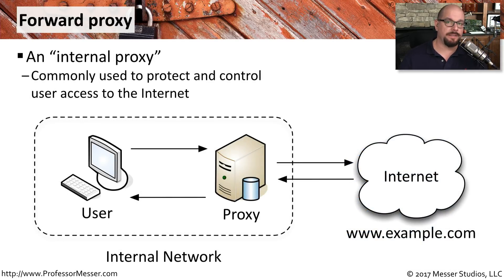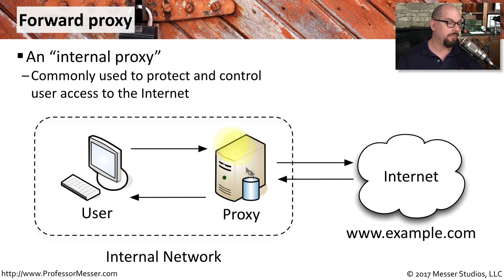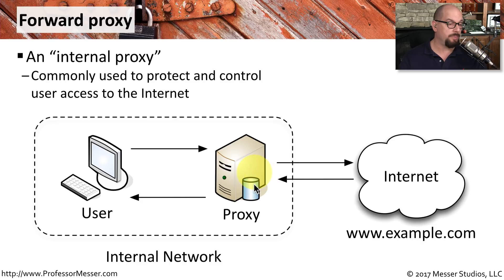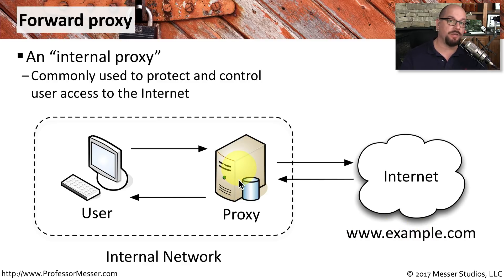There are also different proxies that operate in different ways. If we have a proxy on the inside of our network that we're using to help our users protect themselves from the internet, this is usually a forward proxy. The user will make a request to the internal proxy, which will then make the proxy request on the user's behalf to the internet. The proxy will analyze the response, make sure everything is legitimate and secure, and then send that response to the user. This is also an opportunity for URL filtering — if the user requests a URL they are not allowed to visit, the proxy will immediately send back a response saying they don't have permission.